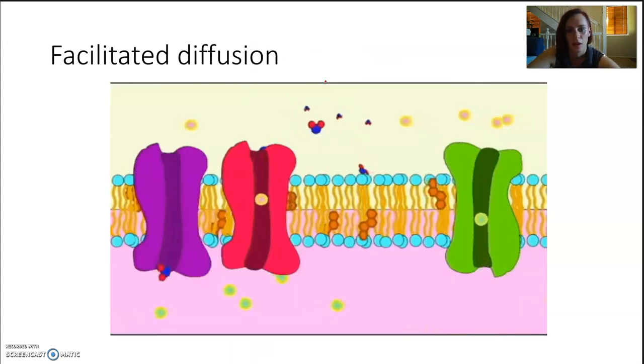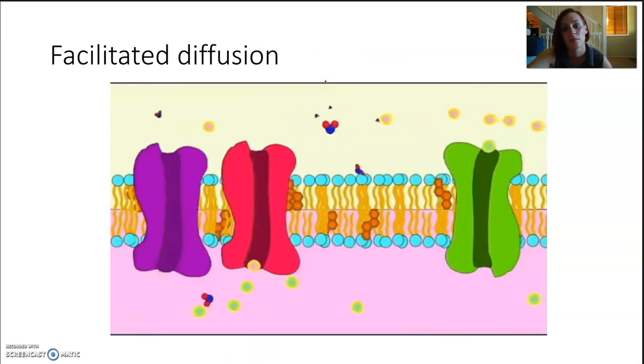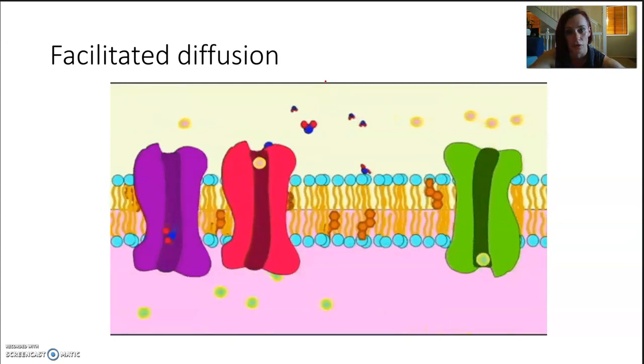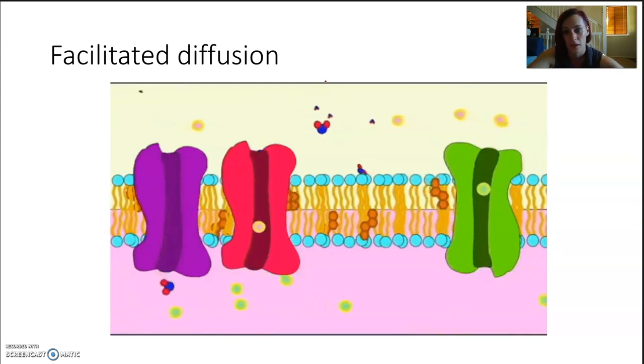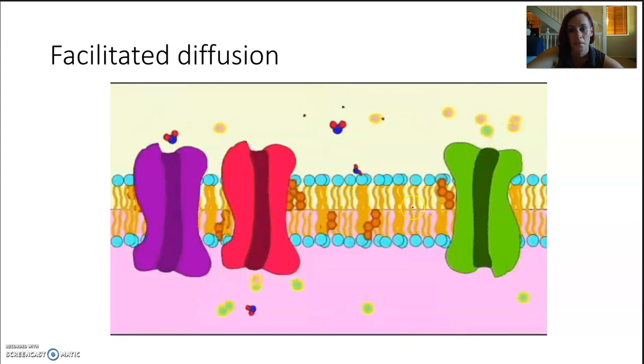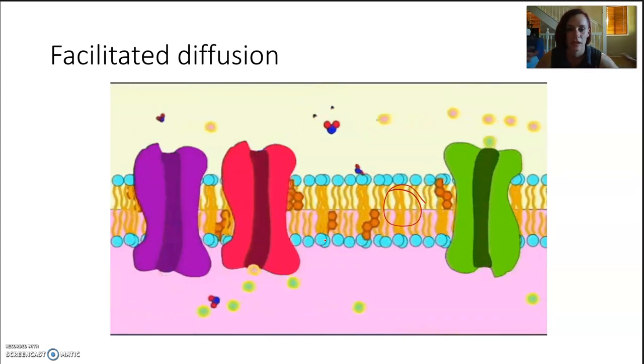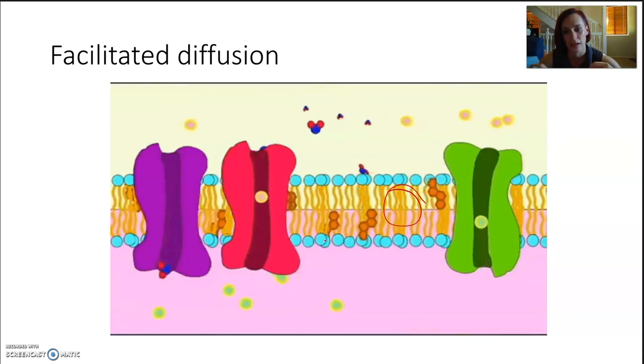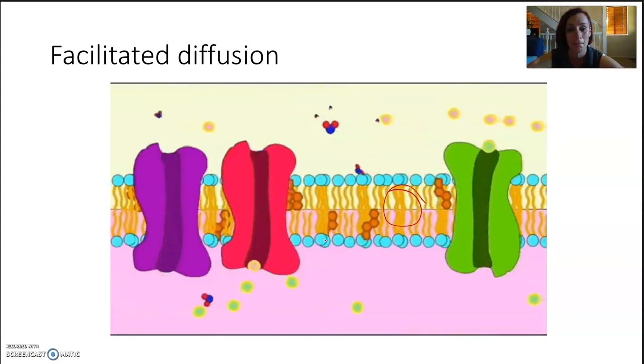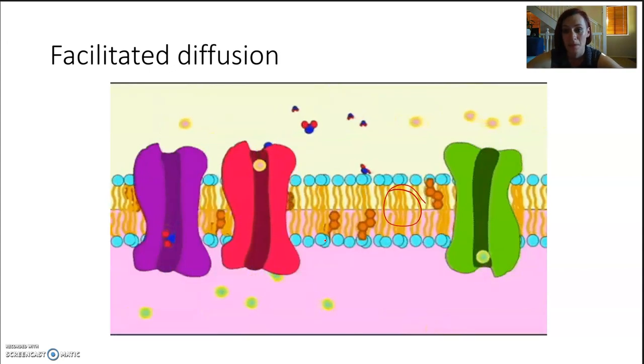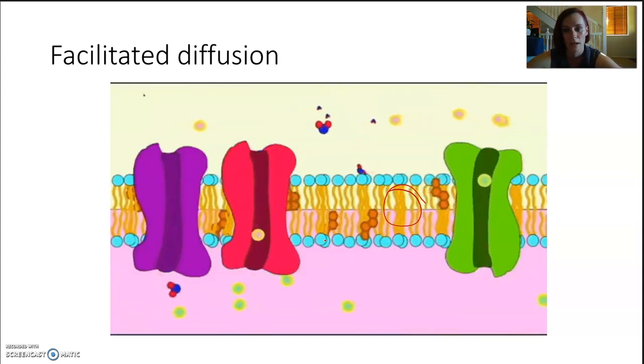In facilitated diffusion, however, they might be substances moving that are too big to just push through. So they need protein channels to be able to do that. The center of the membrane is hydrophobic. Remember, those legs don't want to touch any water. So positive and negatively charged ions need some help to get through and the cells control what type of channels they make based on what their job is. But it's still passive transport. No energy is expended.